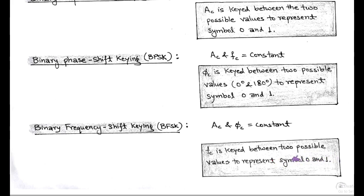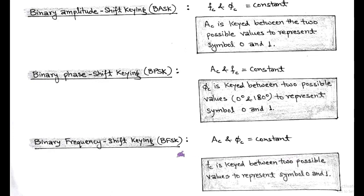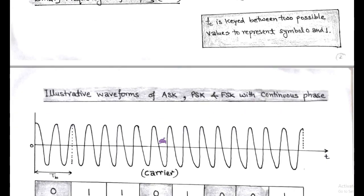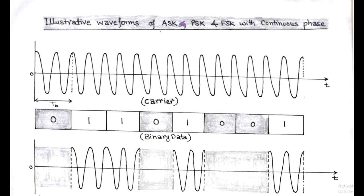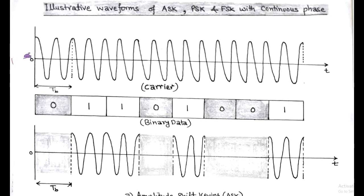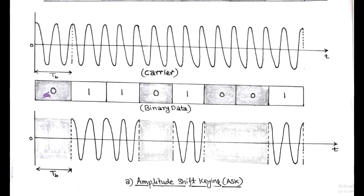This concept becomes clearer by illustrating the waveforms of binary ASK, PSK, and FSK. Initially, we consider a sinusoidal carrier signal and input binary data — for example, 0, 1, 1, 0, 1, 0, 0, 1 — where each binary symbol has a bit duration TB.